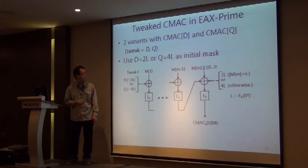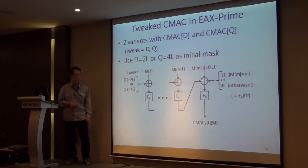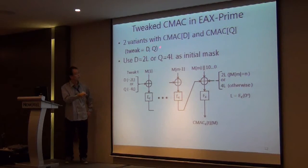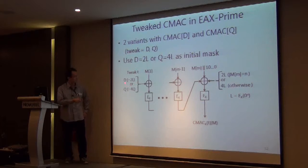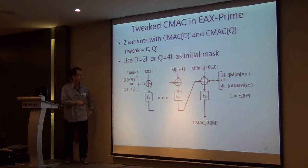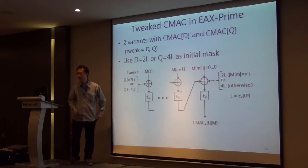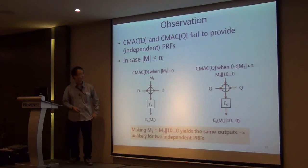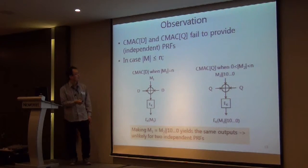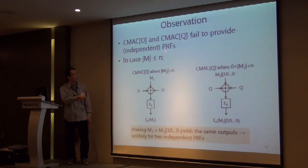For EAX prime, the tweaking method is defined with only two variables. The tweak is called D and Q, where D means 2L and Q means 4L. As a result, the set of initial masking values and the set of final masking values are the same, which makes it easier to mount attacks and allows distinguishing the two functions from independent random functions.